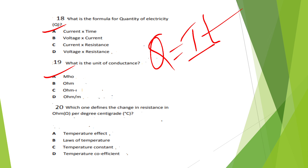Last question, Question 18: Which one defines the change in resistance in ohms per degree centigrade? Options: temperature F, laws of temperature, temperature constant, temperature coefficient. The answer is Option D — temperature coefficient.